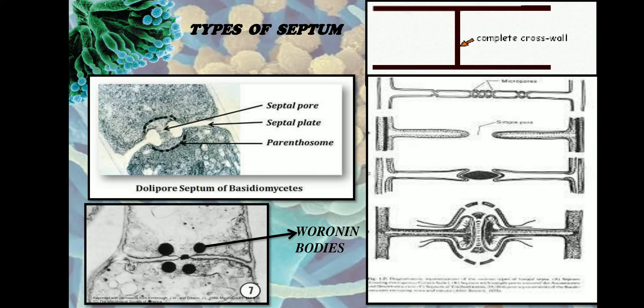Examples of hyphae with complete septa belong to the Oomycota and Zygomycota families. Simple septa with a septal pore are usually seen in the Phycomycetes family. Apart from these, there are also minute pores in the septum called micropores — such septa are called micropore septa.